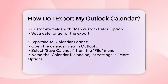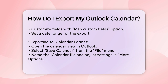Exporting to iCalendar Format: if you need to export your calendar in a format compatible with other calendar applications, you can use the iCalendar format. Open Outlook, go to the Calendar view, and select the calendar you want to export. Click on the File menu, then select Save Calendar. Choose a name for the iCalendar file and click More Options. Here, you can select the date range and detail level for the export. You can choose from predefined date ranges or specify custom dates. Once satisfied with your settings, click OK and then Save. This will save your calendar as an iCalendar file, which you can import into other calendar applications.